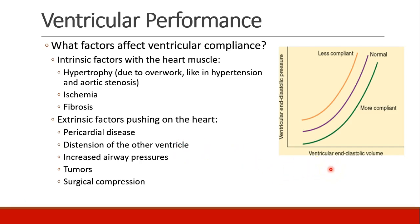We talked about ventricular compliance and the notion that pressures and volumes don't always line up. While it's hard to measure volumes and easier to measure pressures, we are limited by this sometimes. What affects ventricular compliance — the relationship between volume and pressure? There are intrinsic factors: hearts can become hypertrophied from overwork in hypertension or aortic stenosis, and just like any muscle, the heart muscle grows and thickens, giving it less compliance. The same can happen with ischemia or fibrosis. And there are extrinsic factors — things that push on the heart: pericardial disease, distention of the right ventricle impeding left ventricular filling, increased airway pressures, tumors, and surgical compression.